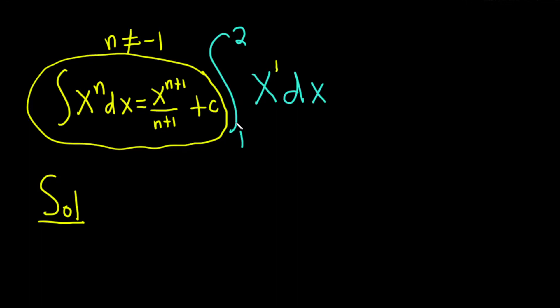In our particular example, n is 1. So we have the integral from 1 to 2 of x dx. We add 1 to the exponent and divide, so it'll be x squared over 2.